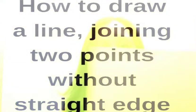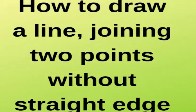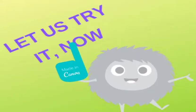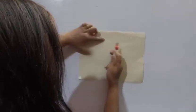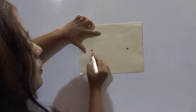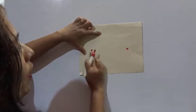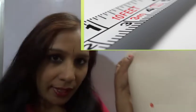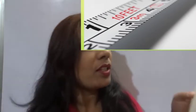Is it possible to join two points without a straight edge? This is a paper. I have two points on this paper. So our work is to join these two points without a straight edge. You just fold the paper like this.